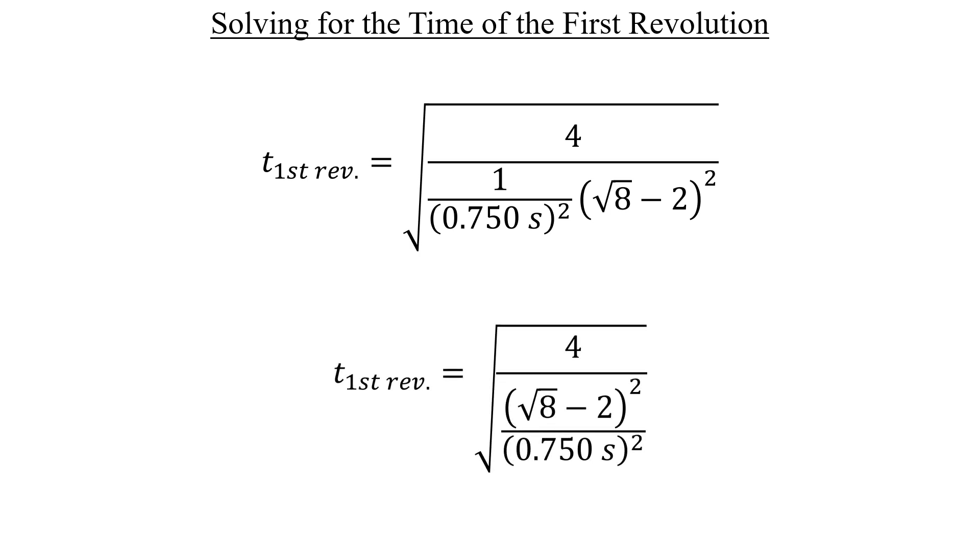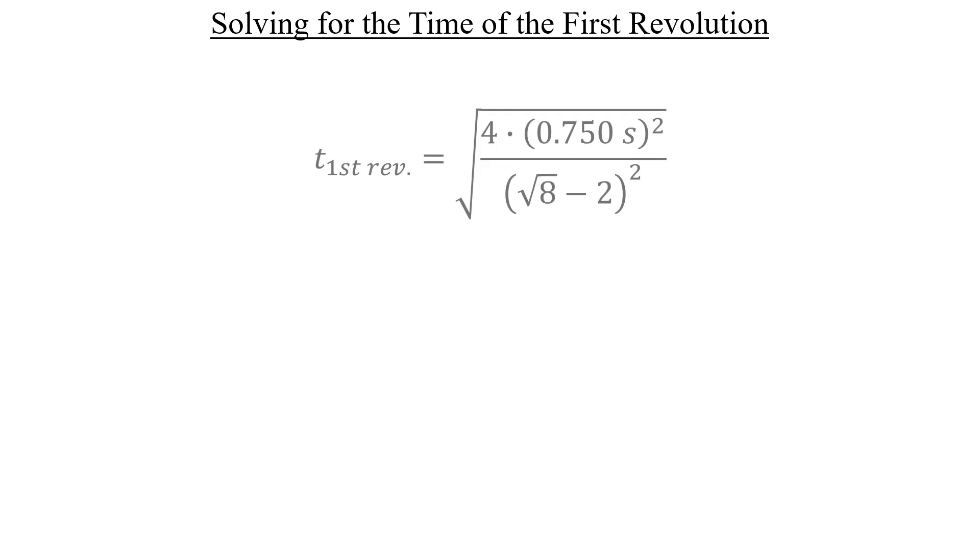Since we're dividing four by a fraction, we can instead inverse that fraction and multiply it by the four, like this. Now, this is a little easier to deal with, and we can plug it into the calculator. There's no more simplification required. I get approximately 1.81 seconds. And that is our answer to part A.